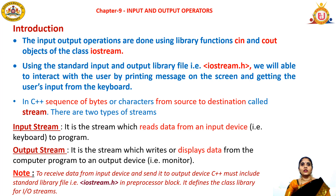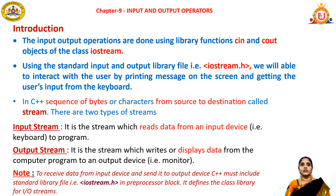Input and output operations in C++ are normally done using two library functions: cin and cout. They are also called objects of the class iostream. To use them, I need to include the header file iostream.h, which helps interact with the user - either to display results on the monitor or to get user input from the keyboard. Whenever data is transferred in bits and bytes from one component to another, this sequence of bytes or characters from source to destination is called a stream.